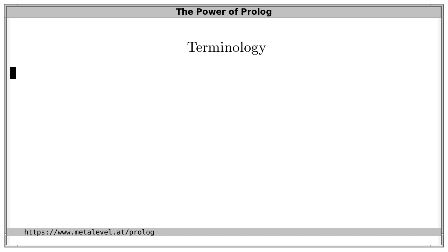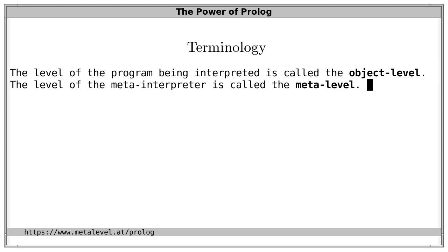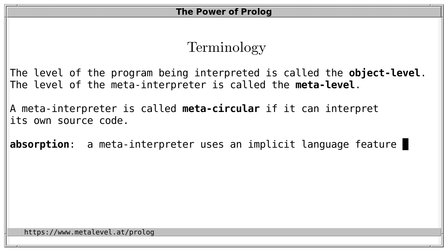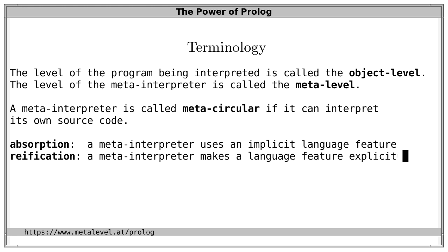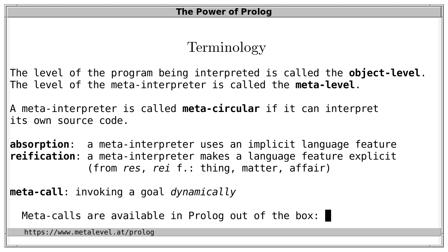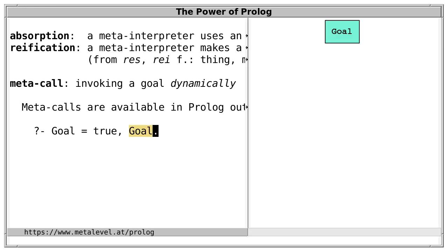Let's start with terminology. The program being interpreted is called the object program, and its level is the object level. The level of the meta-interpreter is called the meta-level. A meta-interpreter is called meta-circular if it can interpret its own source code. Absorption means a meta-interpreter uses an implicit language feature, and reification means it makes a language feature explicit — that is, implements it on the meta-level. This is from Latin 'res rei', meaning 'thing', to turn it into a thing.